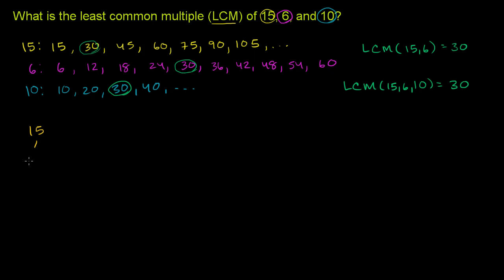You could say 15 is the same thing as 3 times 5. That's its prime factorization. 15 is 3 times 5. Both 3 and 5 are prime. We can say that 6 is the same thing as 2 times 3. That's its prime factorization. Both 2 and 3 are prime. And then we can say that 10 is the same thing as 2 times 5. Both 2 and 5 are prime. So we're done factoring it.